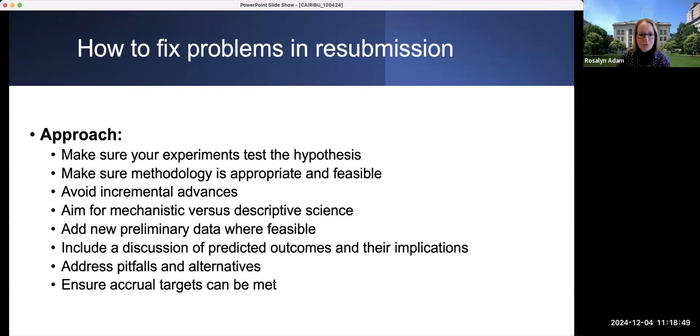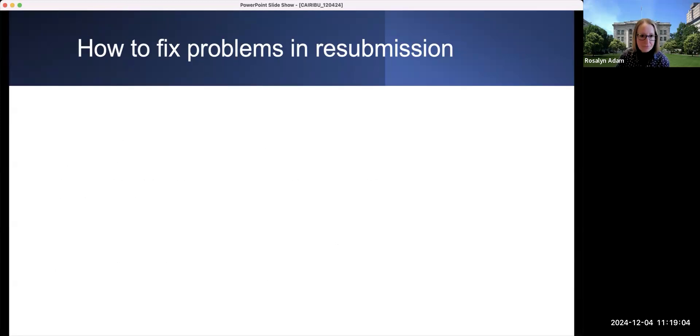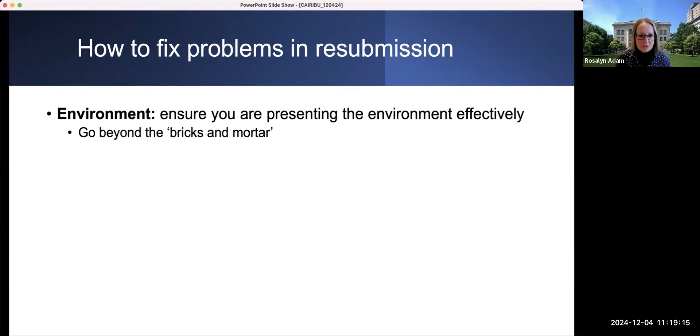If you're doing clinical research, it's really important that you convey to your reviewers that your accrual targets can be met, that you have access to the appropriate patient population. Otherwise, again, you will be criticized for a lack of feasibility. In terms of your environment, it's really important to present your environment effectively in the grant. It's not enough to say that you're at a top notch institution. You have to go beyond the bricks and mortar effectively. Be specific about how your environment enriches the science you do, not simply to state that you're at a great place.